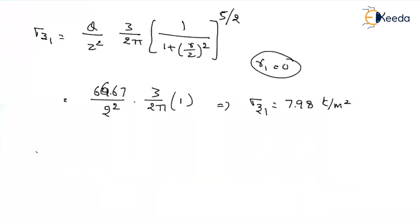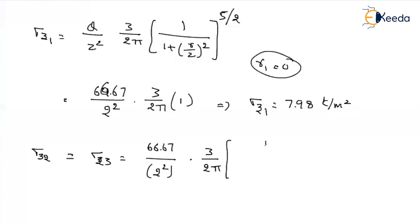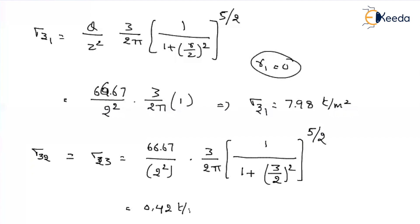For stress at the point because of leg 2 and leg 3, the radial distances are the same (3 meters), depth is 2 meters, and load on both columns is 66.67 tons. So stress from leg 2 equals stress from leg 3. Using the formula: 66.67 divided by 2² into 3/(2π) into 1/(1 + (3/2)²)^(5/2), the result is approximately 0.42 tons per meter square for each.